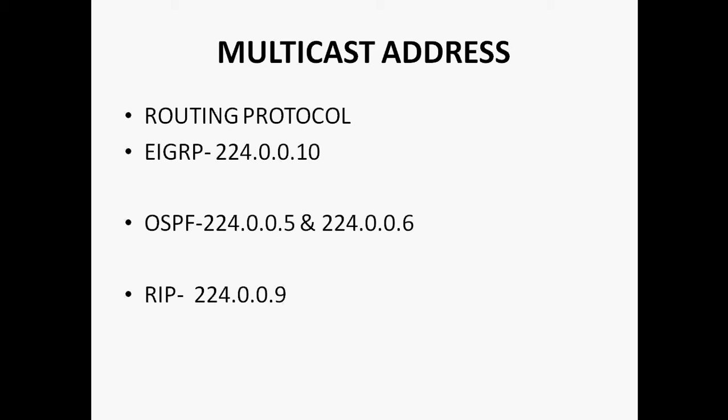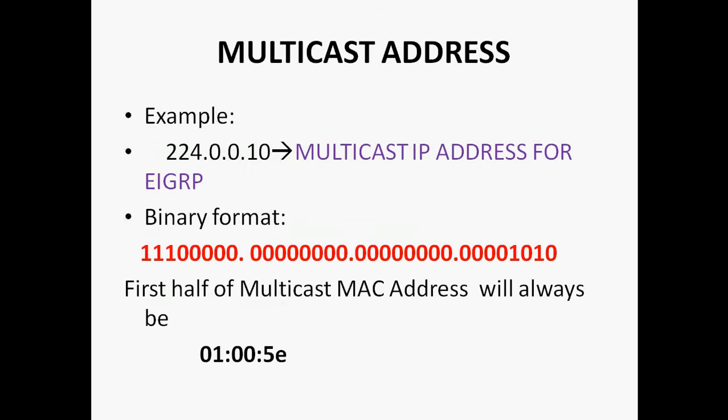In real time, if one device communicates to another device, it communicates through the MAC address only. So this is an IP address — how do we calculate the MAC address? Here I am taking 224.0.0.10, which is used as the multicast address for the EIGRP routing protocol, and we will see how to convert it into a multicast MAC address.